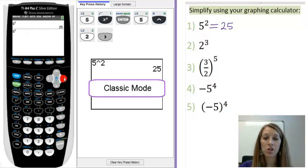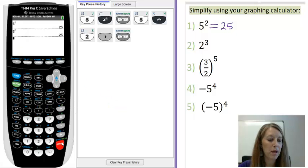If you have an older version of the calculator, it will just look like 5 to the second power, where the to the is represented by that caret key. To simplify it, same way, push enter, and of course, we get the same answer.